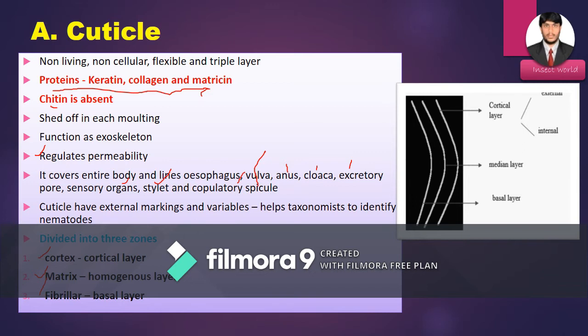The cuticle acts as an exoskeleton, helps in the growth of the nematode, and regulates internal ion permeability. It covers the entire body and lines the esophagus, vulva, anus, excretory pores, sensory organs, stylet, and copulatory spicules.